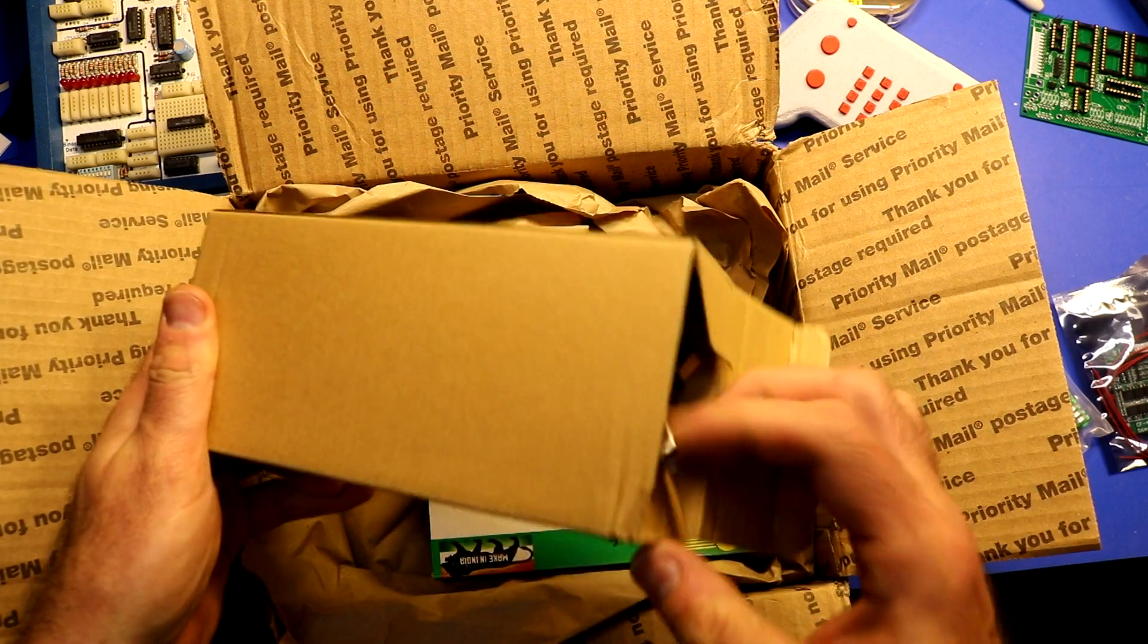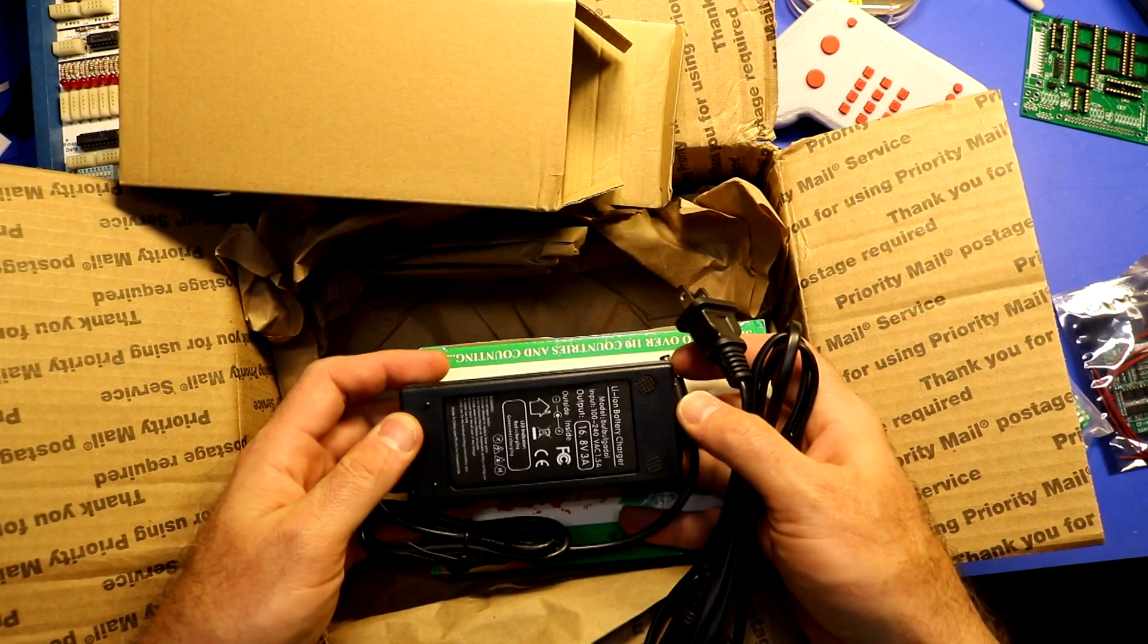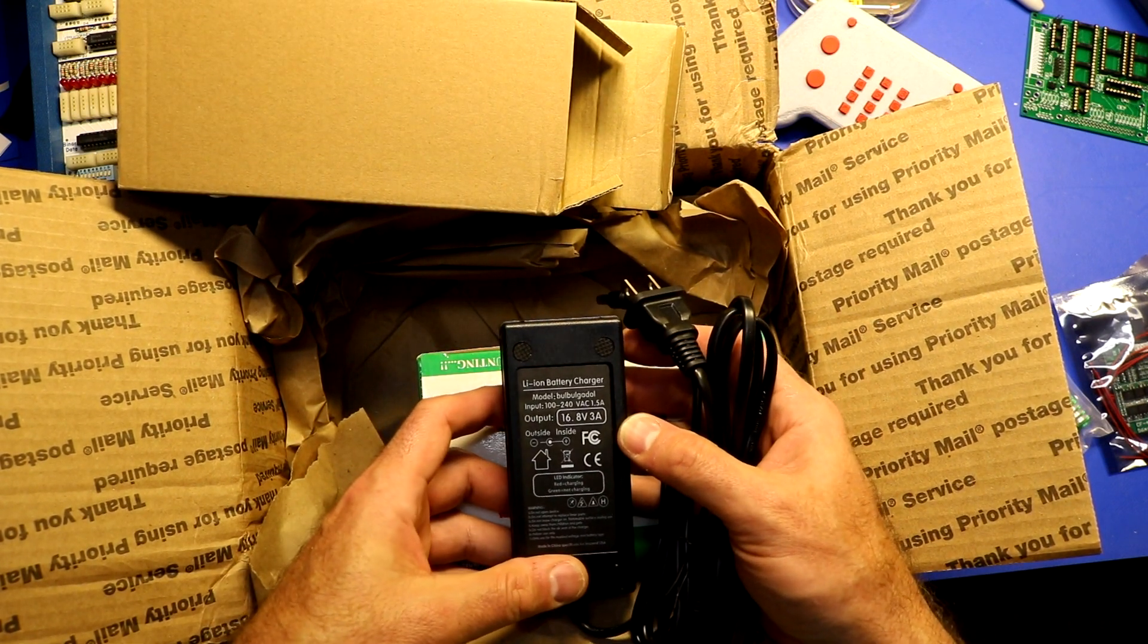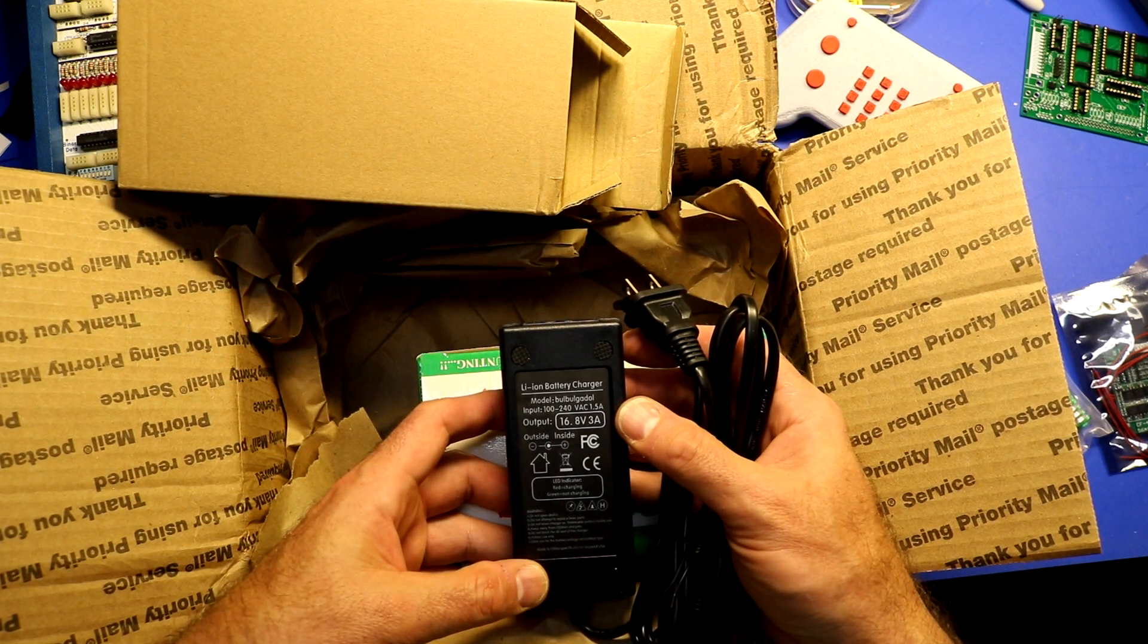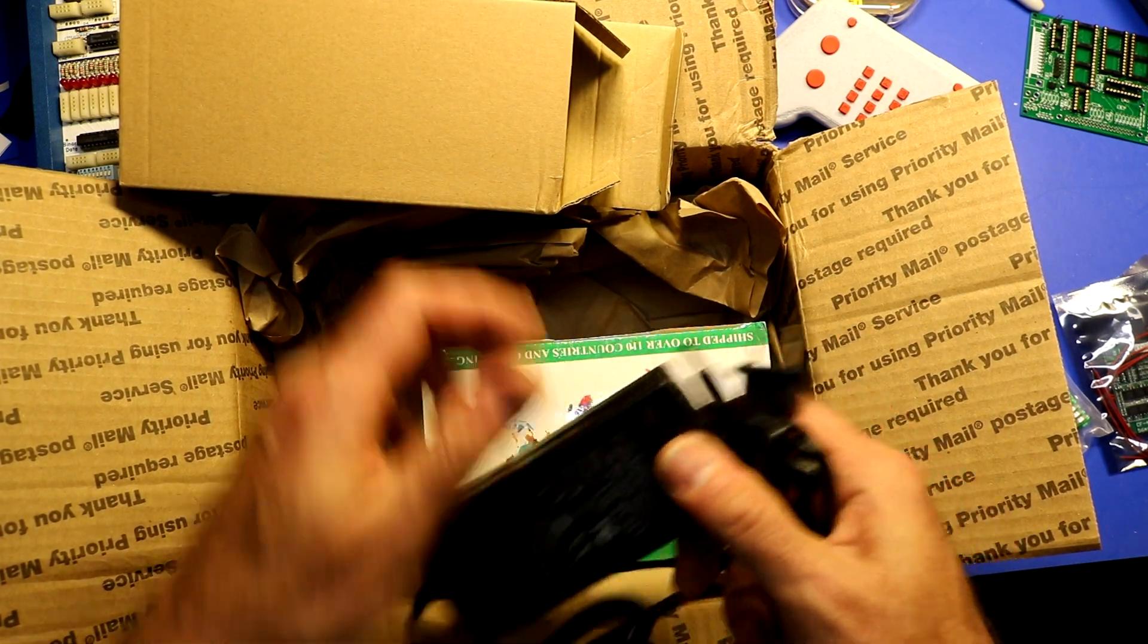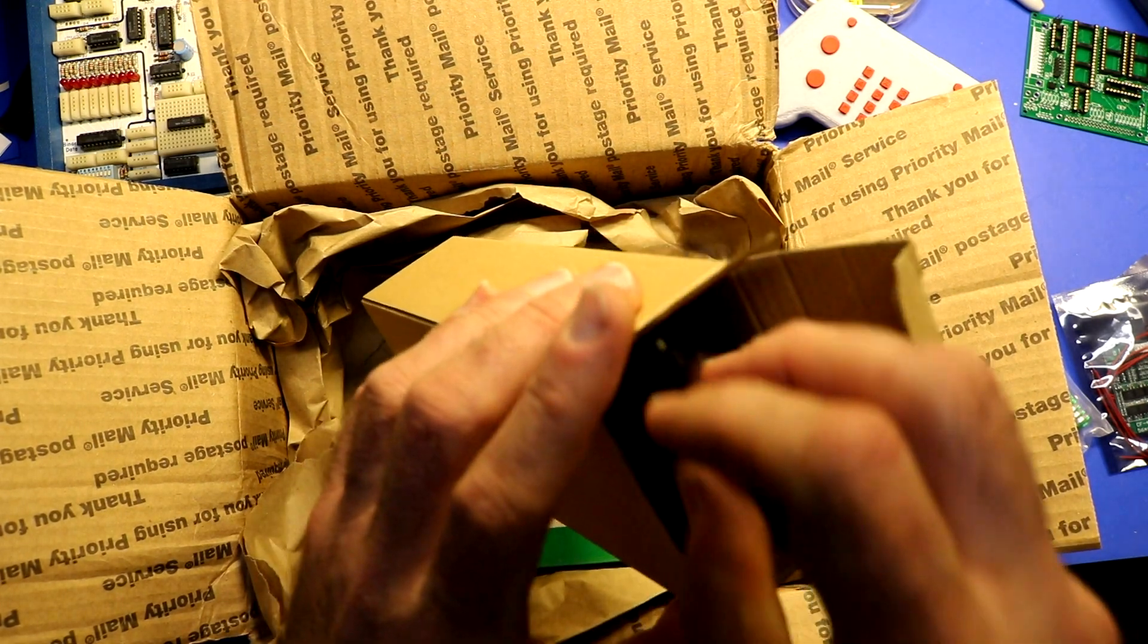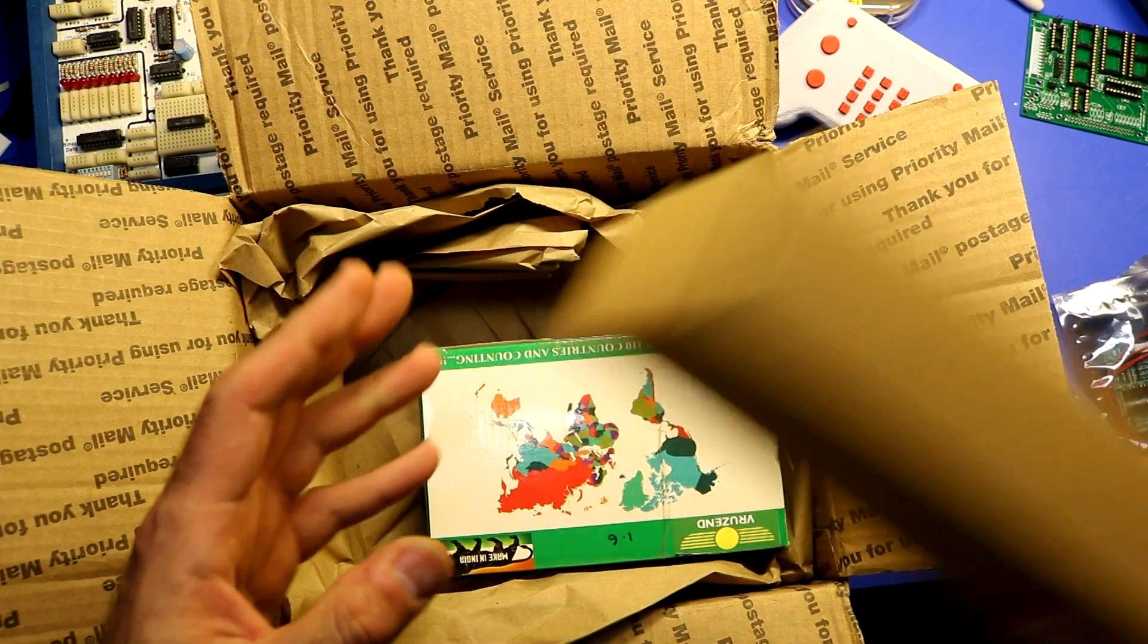This should be my battery charger. It is a 16.8 volt, 3 amp battery charger made by, the model is a Bull Bull Gadol. It'd be interesting to put the voltmeter in and see what voltage actually comes out of this. Is it very tightly regulated to 16.8 or is it just approximate? Who knows? We'll find out.